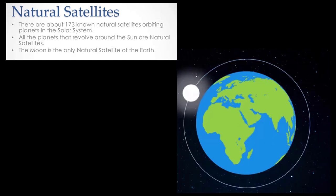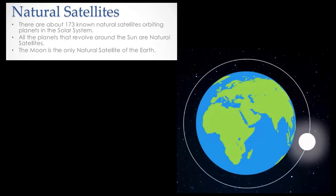There are about 173 known natural satellites orbiting planets in the solar system. We have about 173 natural satellites. All the planets are revolving around the sun, and they are all natural satellites. Different planets have different numbers of moons — for example, Jupiter has 14 moons. They revolve around their respective planets, so they are also natural satellites. The moon is the only natural satellite of Earth.